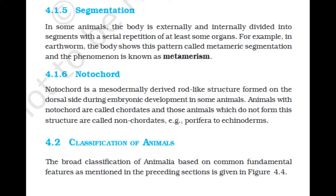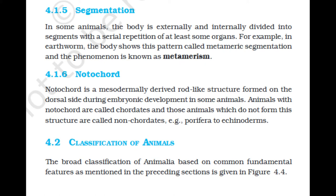Section 4.1.5: Segmentation. In some animals the body is externally and internally divided into segments with a serial repetition of at least some organs. For example, in earthworm the body shows this pattern called metameric segmentation, and the phenomenon is known as metamerism. Section 4.1.6: Notochord. Notochord is a mesodermally derived rod-like structure formed on the dorsal side during embryonic development in some animals. Animals with notochord are called chordates, and those which do not form this structure are called non-chordates, e.g., Porifera and echinoderms.